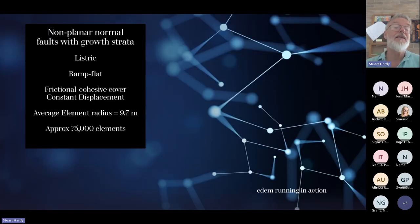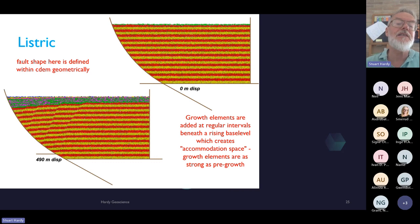It's back to Ken McClay again. I don't believe that analog modelling is the be-all and end-all, but if you're going to compare a numerical model, you'd like to compare it against something that's known. Boundary conditions are absolutely known, material properties are known. So I'm going to look at non-planar normal faults here with growth strata again. Either listric or ramp flat. I make no comment about the applicability of the ramp flat model, but it does produce nice results and we can compare if we want to. Constant displacement on the fault. That means this mylar sheet, which is pulled. At least we know the displacement boundary conditions. Average element radius is increased now. It's nearly 10 meters because we have around 75,000 elements in this. These are just going to be examples.